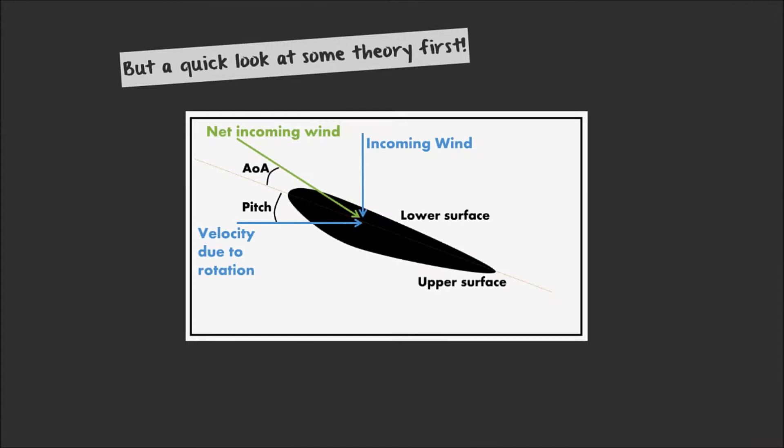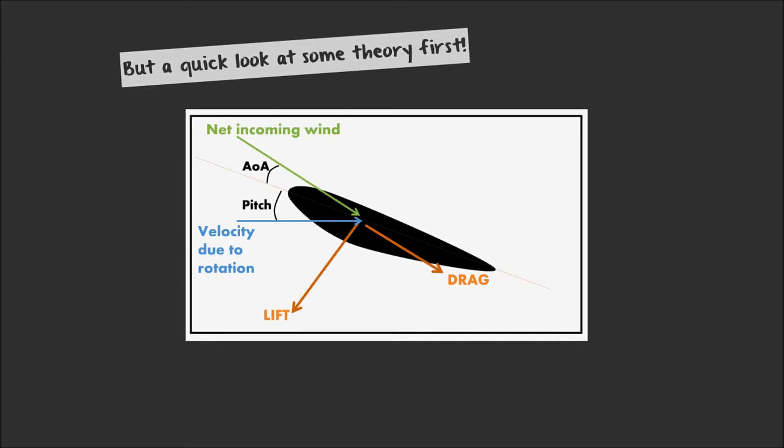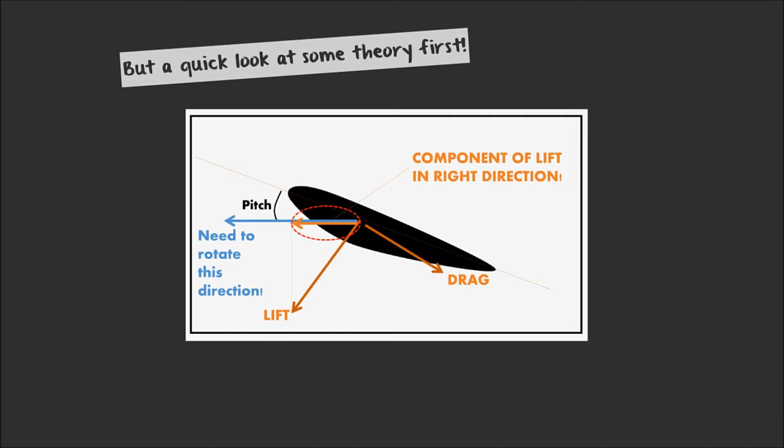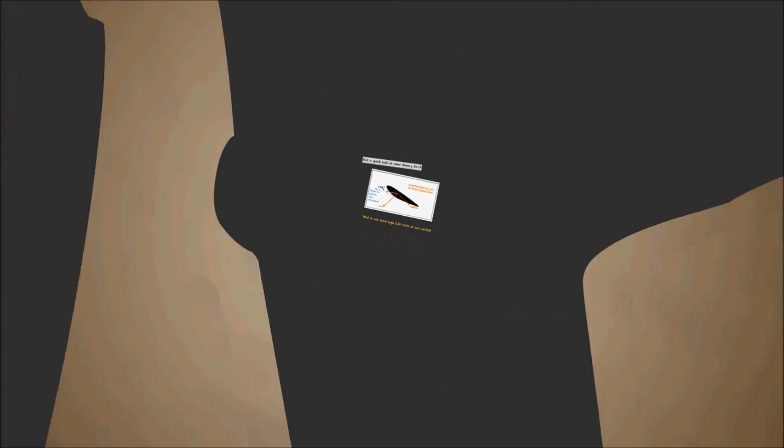A wind turbine works when its lower surface faces the incoming wind. With the induced velocity due to rotation, we have the net wind striking the airfoil at an angle of attack. Hence, lift and drag is created as shown. To keep rotating, we need to maximize the component of lift in the right direction. Hence, good wind turbine airfoils must have high lift over drag ratios. And with this in mind, we start shortlisting our airfoils.